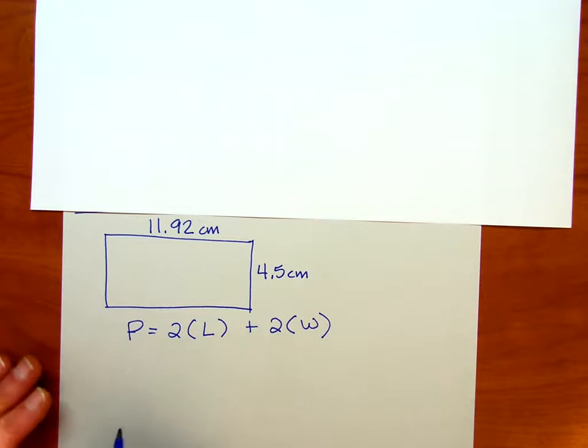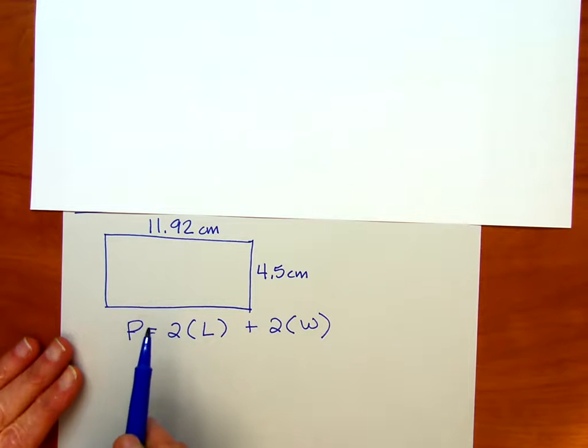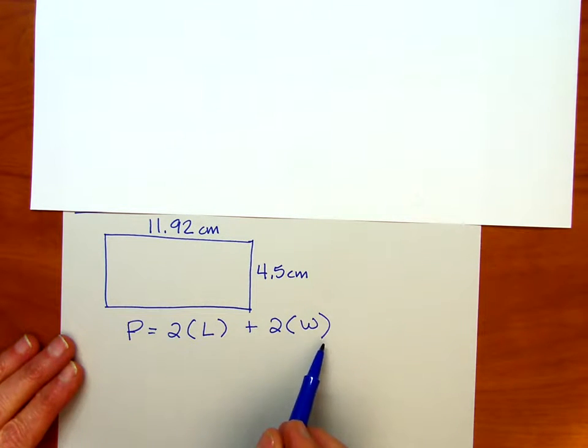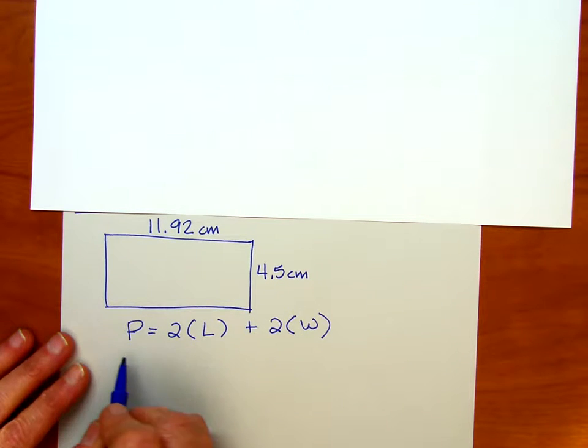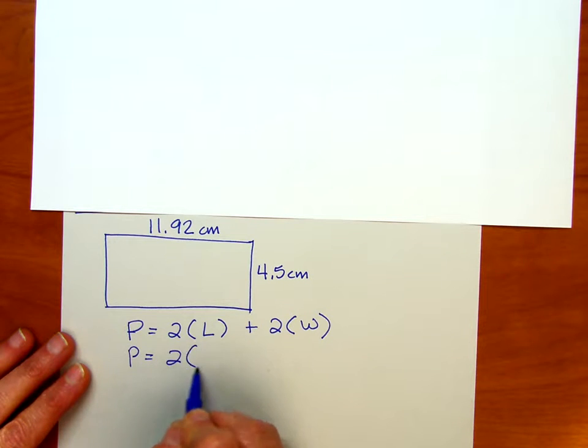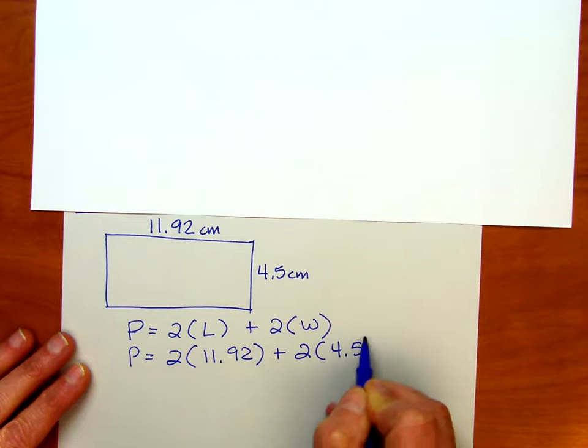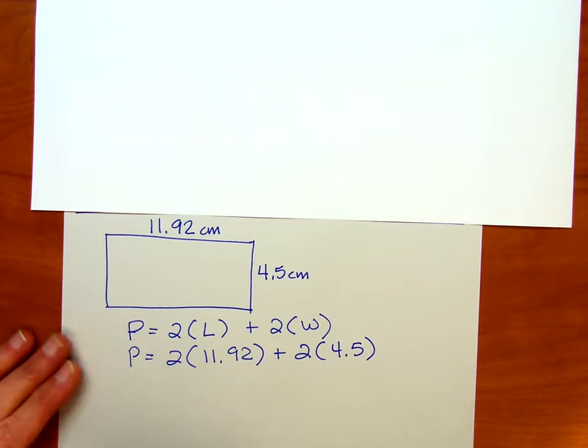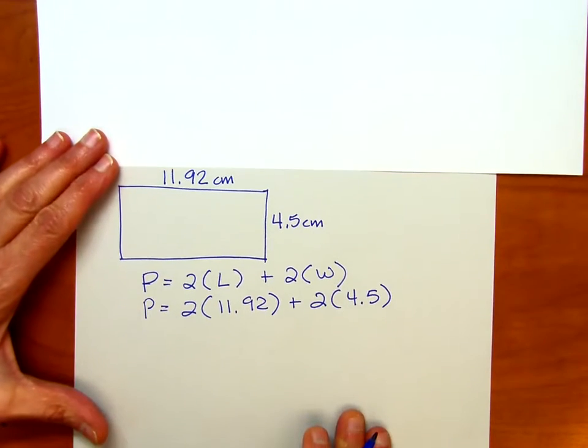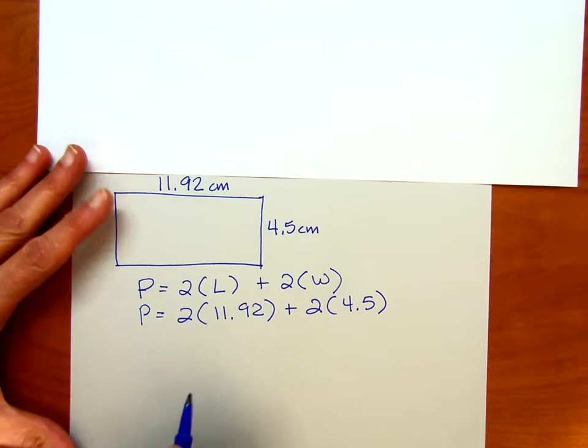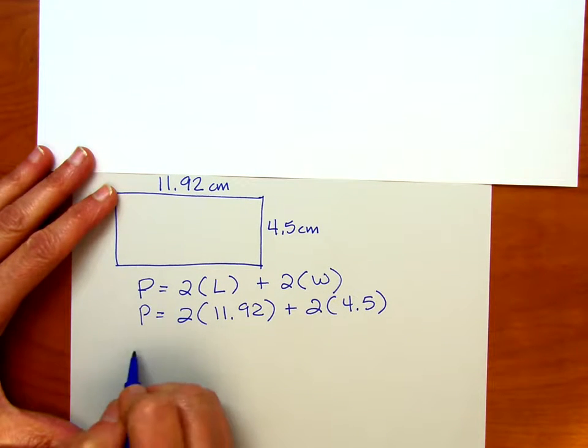And so, if we were to do this problem to find the perimeter, we would just plug in our length and our width and then do some math. So, if I were to rewrite that, that would look like this: two times 11.92, or 11 and 92 hundredths, plus two times four and five tenths. Now, we might have to do some math on the side here, and we can do that.